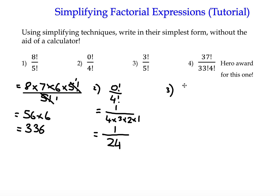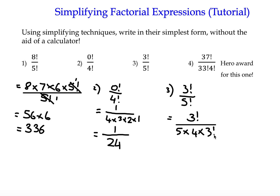Number 3 can be done in the same way as number 1. Here, 5 factorial is greater than 3 factorial, so we leave 3 factorial as it is and decompose the 5 factorial: 5 multiplied by 4 multiplied by 3 factorial. We stop there because it matches the denominator. We divide through by 3 factorial, leaving us with a numerator of 1 and a denominator of 5 times 4, which is 20. So the answer is 1 over 20.